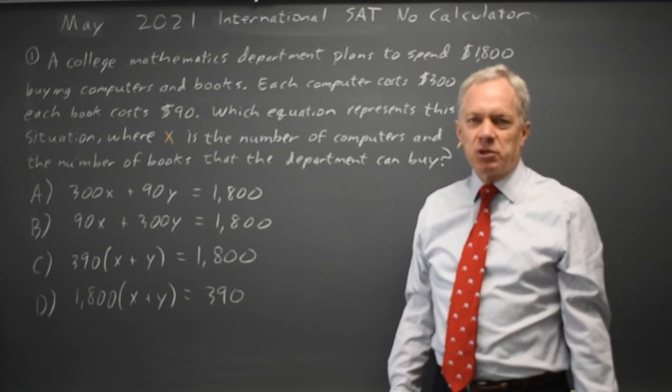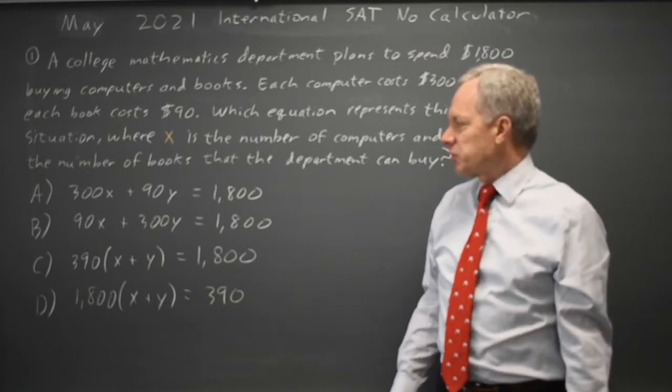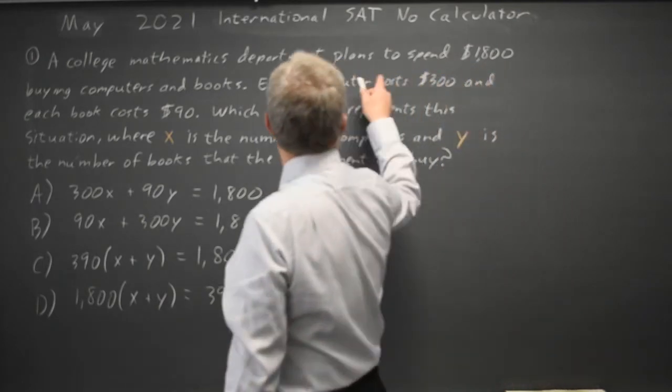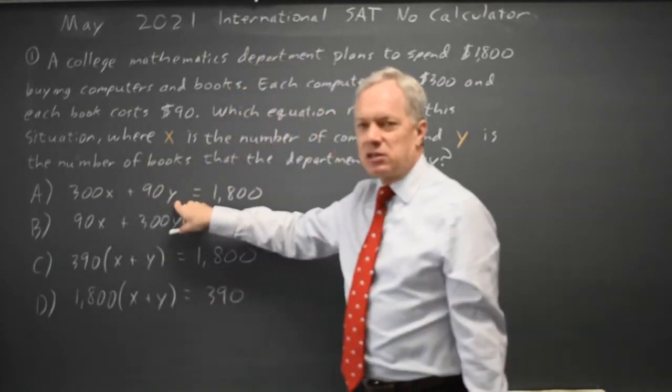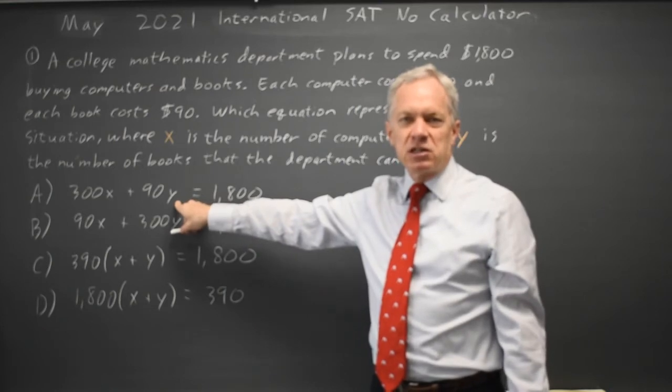$90 per book times Y books is the number of dollars spent on books. So 300X is the number of dollars spent on computers, 90Y is the number of dollars spent on books, and the sum is the total